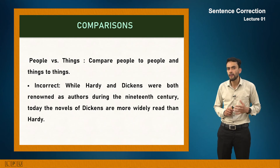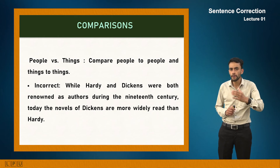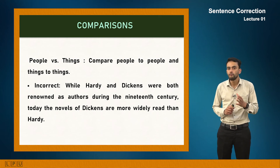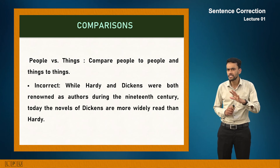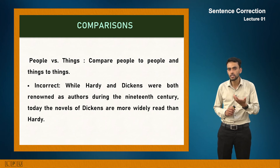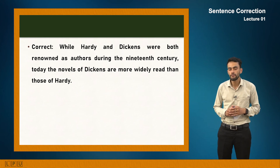The third type of error is errors in comparisons. When comparing two things, you should compare like with like — people to people and things to things. For example: 'Today the novels of Dickens are more widely read than Hardy' is wrong because it compares novels with a person. The correct sentence is: 'Today the novels of Dickens are more widely read than those of Hardy.'